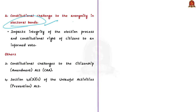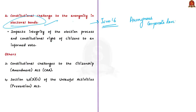Under the Electoral Bond Scheme, bonds may be purchased by a citizen of India or a person incorporated or established in India. The scheme authorizes anonymous corporate donations to political parties, making election funding entirely opaque to the people. Additionally, the scheme is structurally biased towards the party in power at the Center. This impacts not only the integrity of the election process but also the constitutional right of citizens to an informed vote.